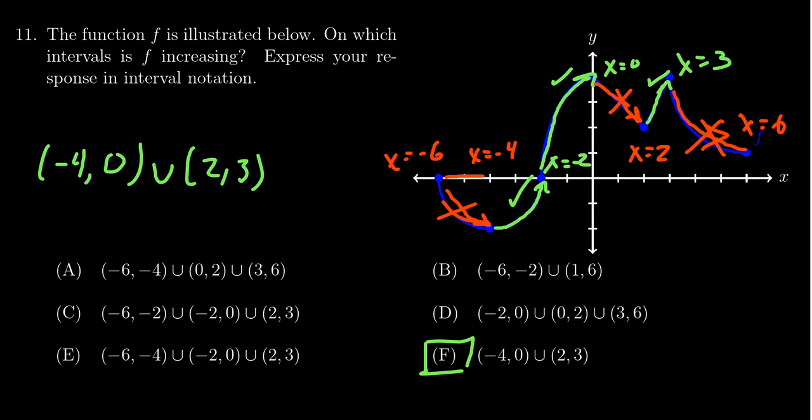we're always referencing the x-coordinates, not the y-coordinates. On which x address will we be going up? That's what's being asked here. And so the domain, the intervals in the domain that make the function go up is negative 4 to 0 and 2 to 3.